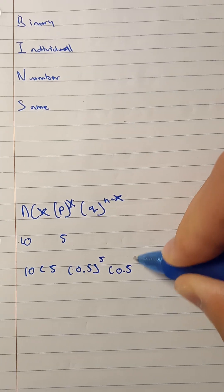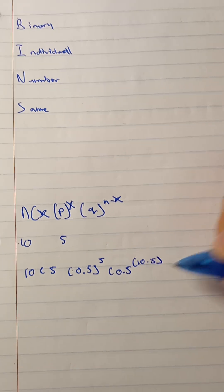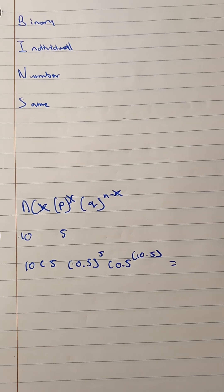0.5 to the 10 minus 5, that would be the probability. Now let's find that.